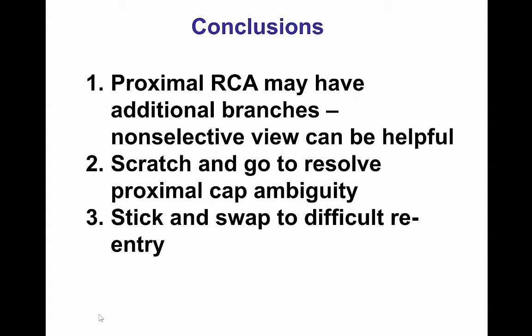This case highlights several factors regarding lesions with an ambiguous proximal cap. First, an LAD can be occluded and filling from collaterals from the proximal right coronary through a vieussens collateral or through the conus branch. Performing less selective injections of the right coronary artery may help identify those branches and clarify the course of the LAD. Another important point is the scratch and go technique: when antegrade wire escalation is unsuccessful in cases of ambiguous proximal cap, it may be safer to create a dissection proximally, followed by knuckle formation and crossing the lesion in the subintimal space, followed by distal reentry.